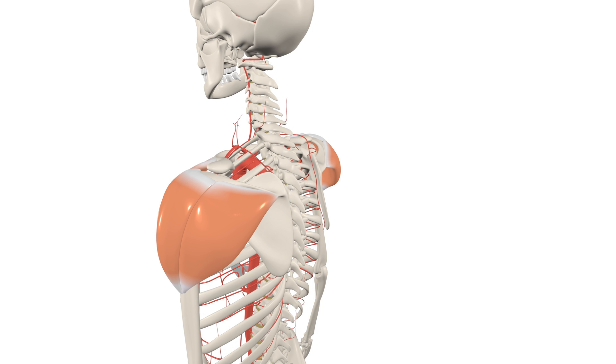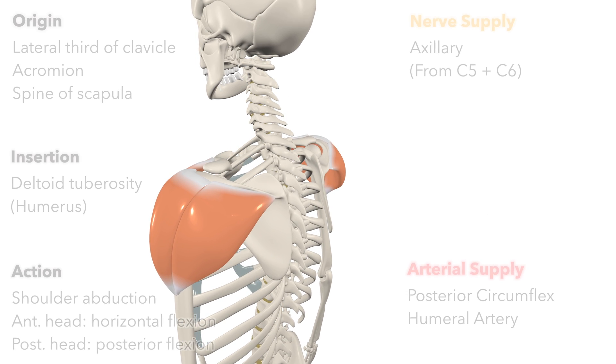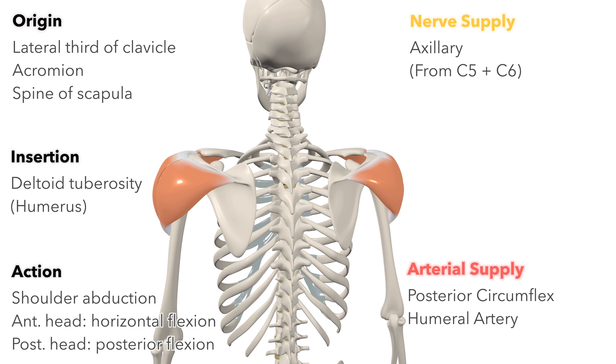Arterial blood is supplied to the deltoid by the posterior circumflex humeral artery. And that's it for the anatomy of the deltoid muscle.